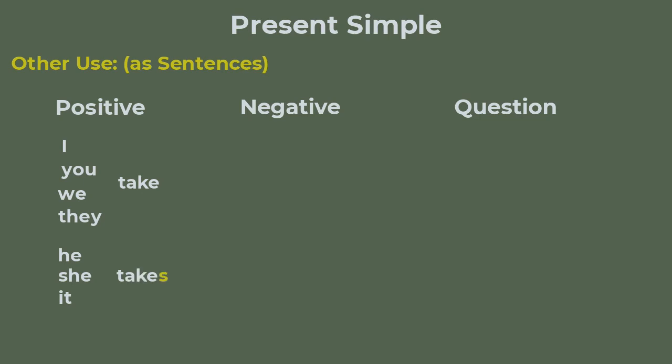For the negative sentence we need to use a helping word 'do'. And because the action lies in the helping word we need to negate it and it gives us I, you, we, they do not take and if we squeeze them together we will have don't take.